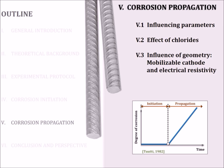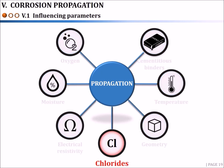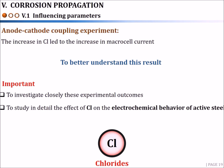After presenting the corrosion initiation phase, it's time to move on to corrosion propagation. The corrosion propagation phase is an important phase that must be added to the service life of the structure. Many parameters are known to affect the rate of corrosion propagation, including oxygen availability, cementitious binders, temperature, geometry of the structure, chloride level, electrical resistivity, and moisture content. Considering the results from the anode-cathode coupling experiment, the increase in chloride level led to an increase in macrocell currents. To better understand this, it was important to study in detail the effect of chloride level on the electrochemical behavior of active steel.